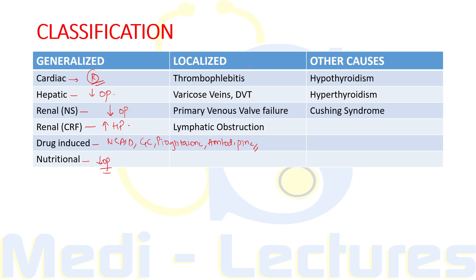Localized edema can be due to thrombophlebitis, which is the inflammation of blood vessels. There will be inflammation of capillaries leading to increased leakage of protein. Varicose veins, DVT, primary venous valve failure will lead to venous blockade and additional interstitial fluid cannot be drained. Similarly, lymphatic obstruction will also lead to edema.